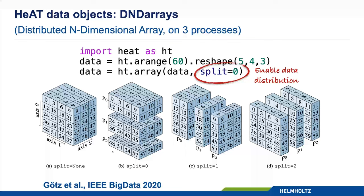The data is distributed and load-balanced across processes. You can pick every axis available in your dataset — split=0 distributes along the first axis, split=1 distributes along the rows, and split=2 distributes along the columns. Check out our paper for a detailed description of the programming model.